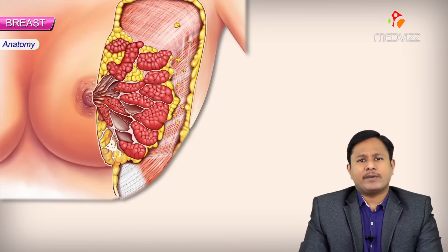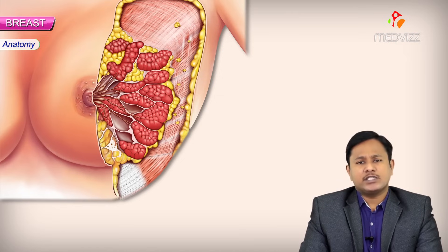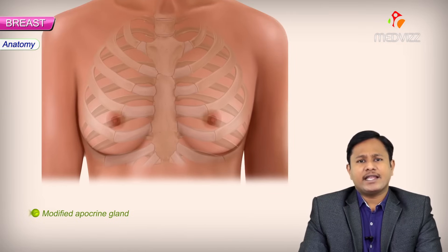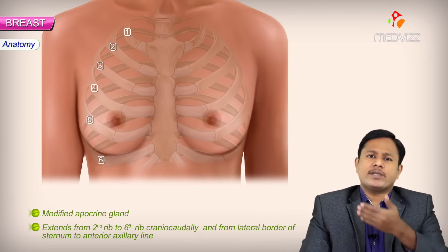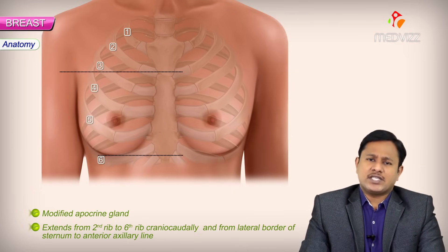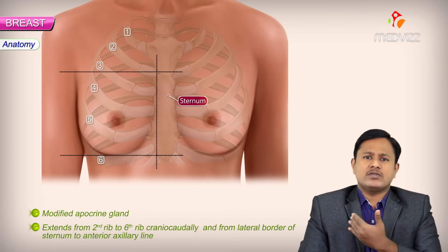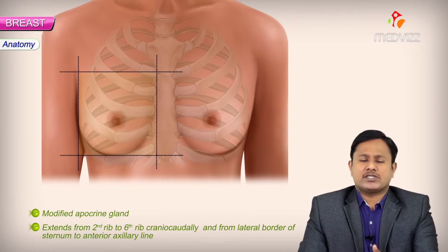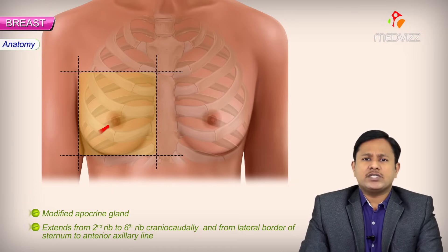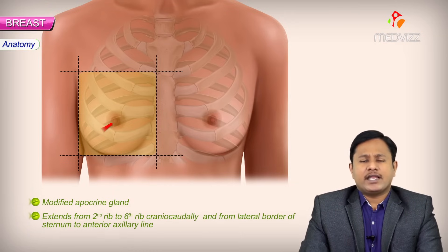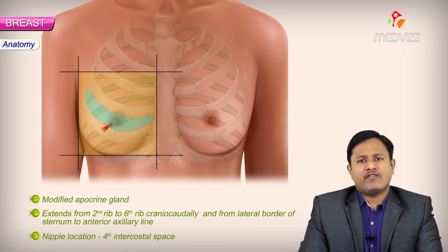Now we will move on to the anatomy of the breast. The breast tissue is actually a large sweat gland — a modified apocrine gland. This modified apocrine gland extends craniocaudally from the second to the sixth rib, and from medial to lateral from the lateral part of the sternum to the anterior axillary line. The nipple position is generally fixed and is commonly present at the fourth intercostal space.